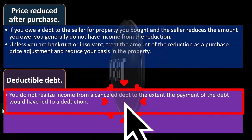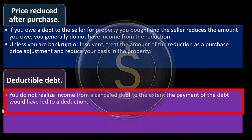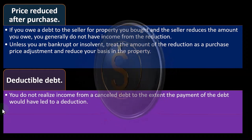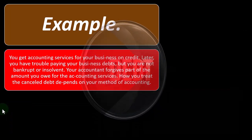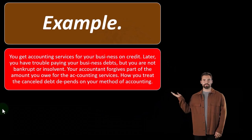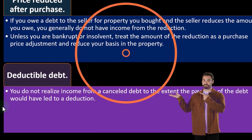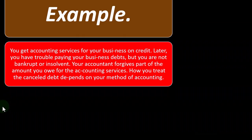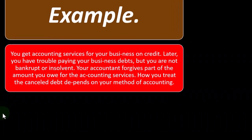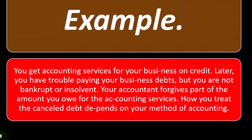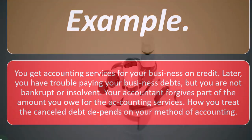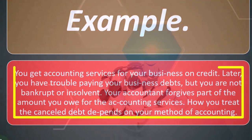Exception 2 — Deductible debt: you do not realize income from a canceled debt to the extent that payment of the debt would have led to a deduction. If it would have led to a deduction, then including it as income and then deducting it would net out anyway, so you may not have to include it at all.